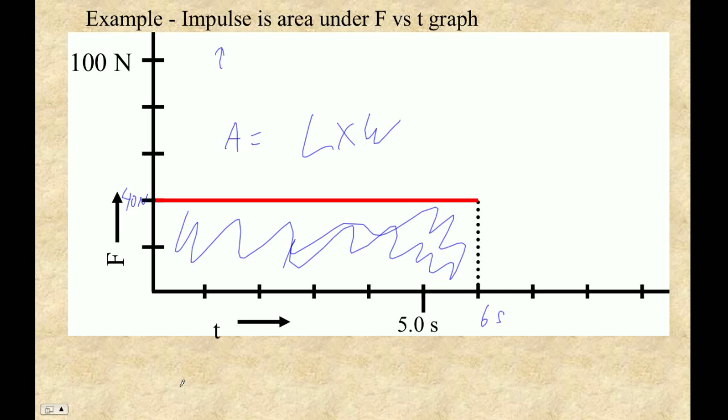So the impulse, this is easy, it's just a rectangle. So it's the area under, equals length times width. So that is the length times width - this is 6 seconds times 40 newtons, and 6 seconds times 40 newtons is 240 newton seconds.